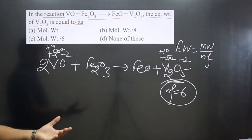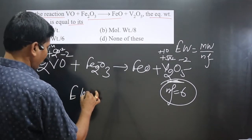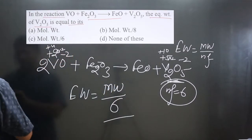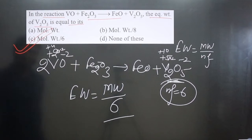Your answer is ready. Then equivalent weight is equal to molecular weight divided by six. Any option given here? You can see six is option C. Option C is correct.